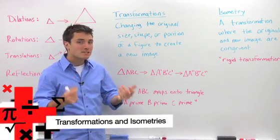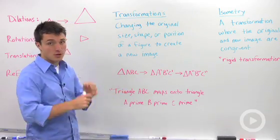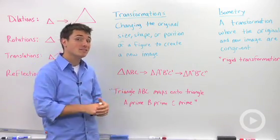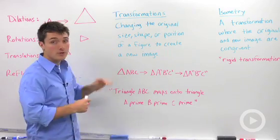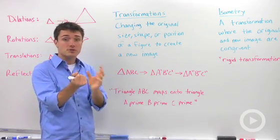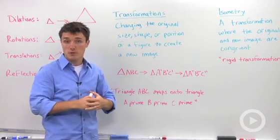Transformations in geometry basically change the original size, shape, or position of a figure to create a new image. You're going to start with something and change it in some way and end up with a new image.